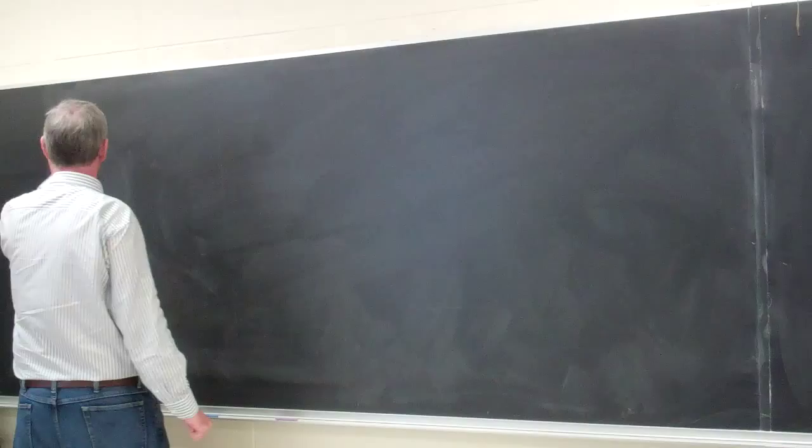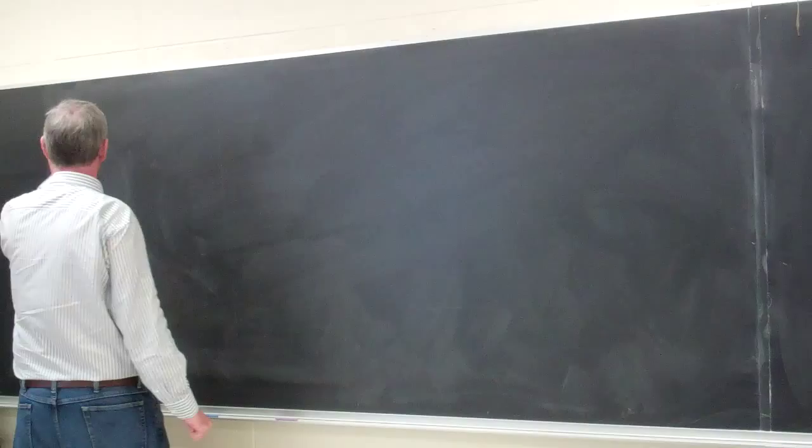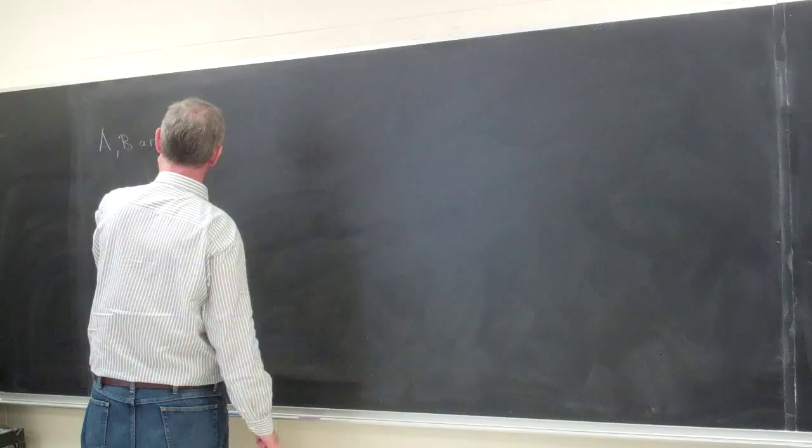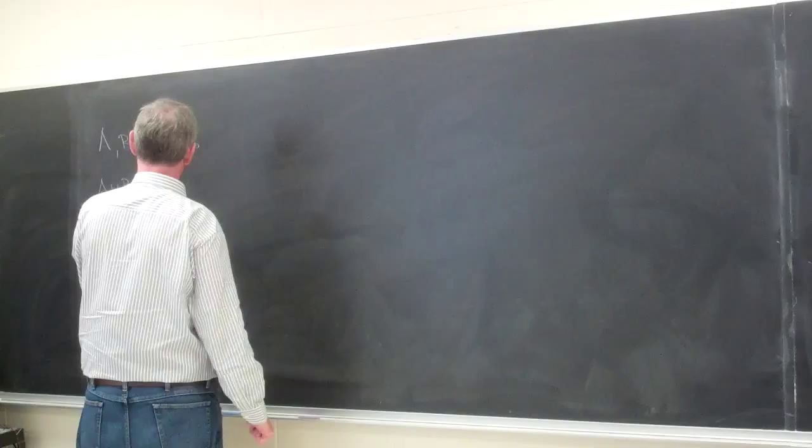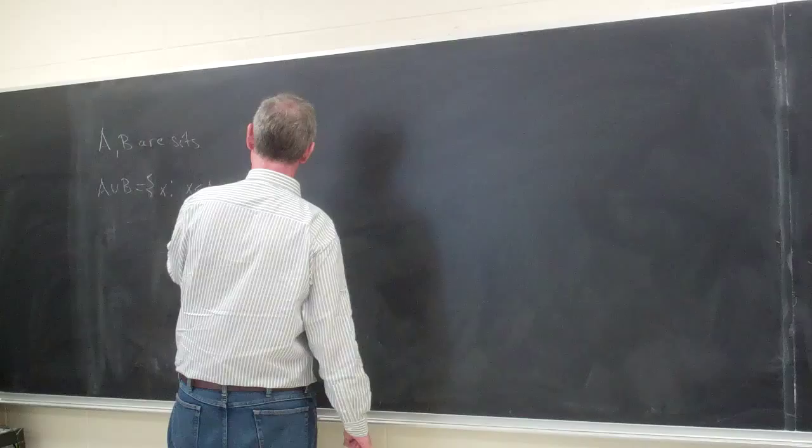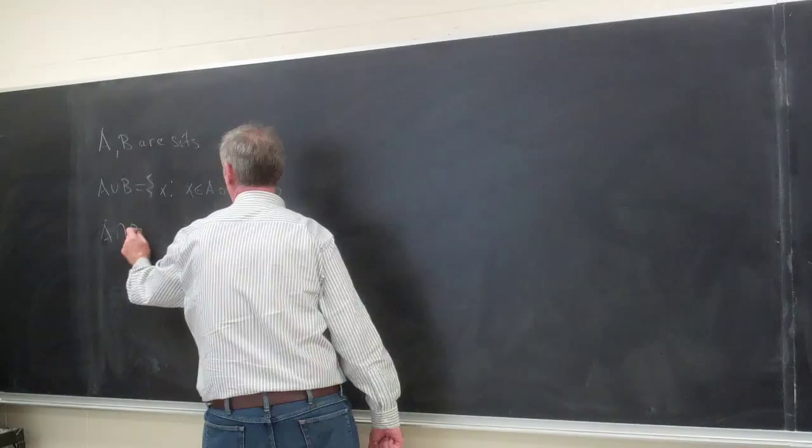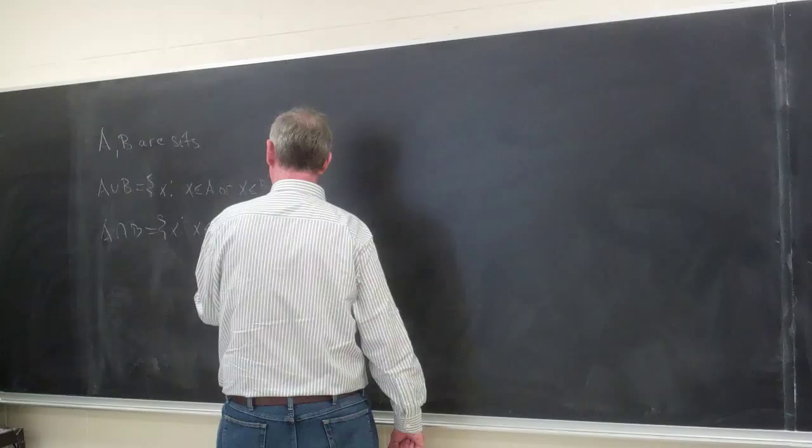So let's suppose that A and B are sets. Then A union B is the set of all X such that X is in A or X is in B. A intersect B will be the set of all X such that X is in A and X is in B.